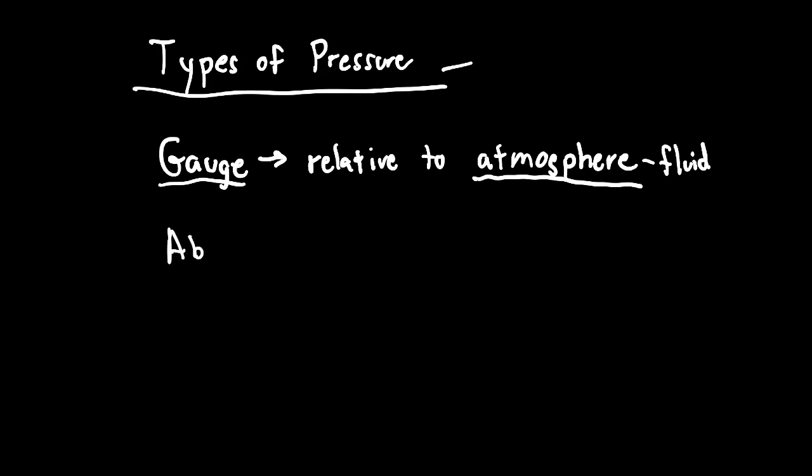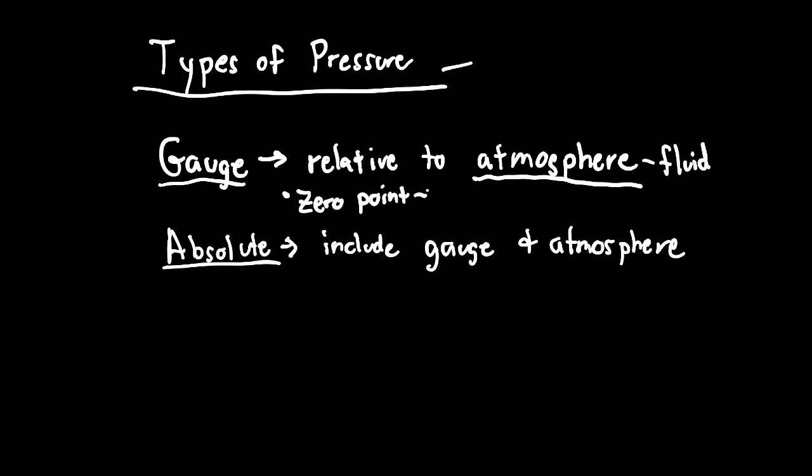The atmospheric fluid, we don't include the pressure from the atmosphere in gauge pressure. We do have another kind of pressure called absolute. Absolute pressure is where we include gauge pressure and atmospheric pressure. The real difference between these is in their zero points.